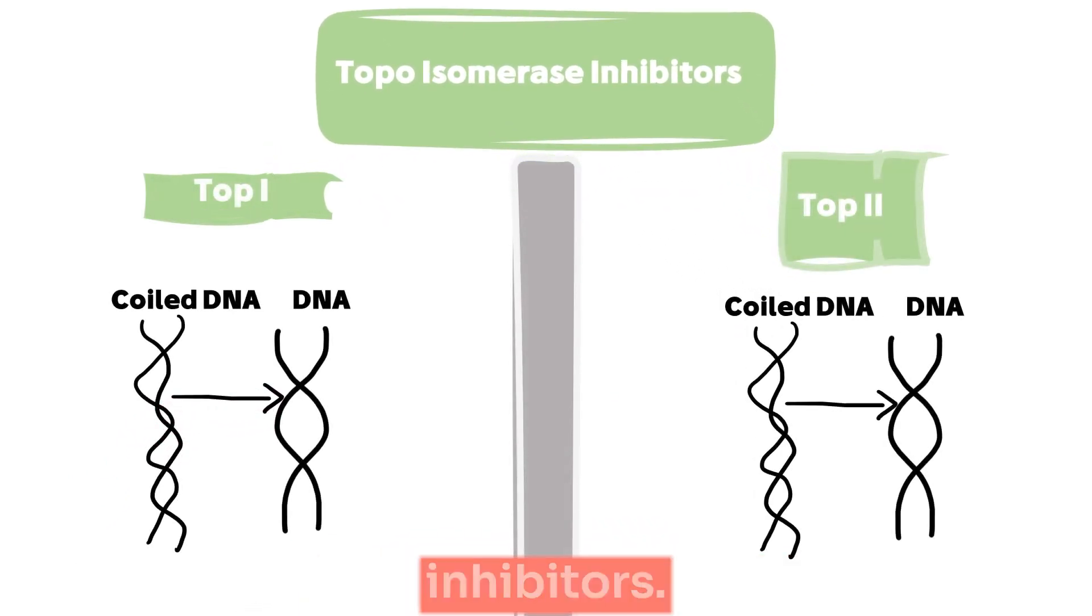There are two classes of topoisomerase inhibitors, a class that inhibits topoisomerase 1, camptothecin is one of them by the way, and another class that targets topoisomerase 2.